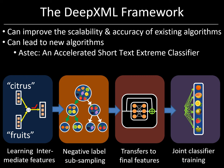The motivation in the second module is to reduce the problem for each training point from an extreme problem with L labels to a traditional classification problem with just order log L labels. Then in the third module, we can use transfer learning to fine-tune the intermediate features and learn a final feature representation. The motivation in this module is to get all the accuracy gains due to fine-tuning while still maintaining logarithmic costs by ensuring that the hardest negative labels continue to remain in the label shortlist. Then in the fourth module, we can jointly train a classifier along with the final feature representation, and training of all of these modules can be carried out end-to-end in log time.